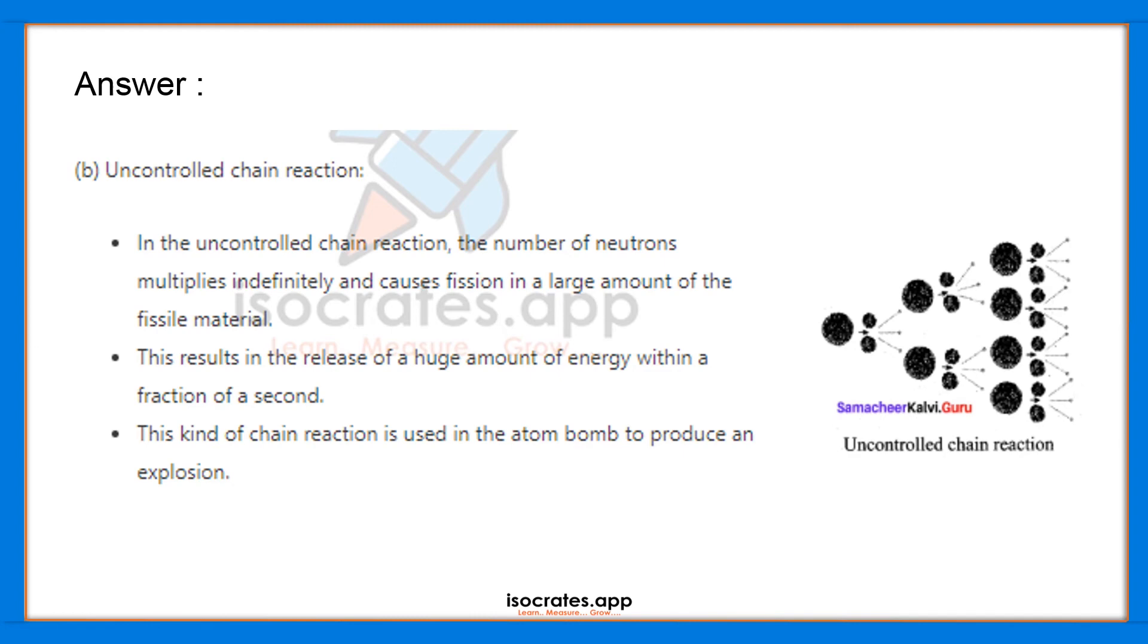This kind of chain reaction is used in the atom bomb to produce an explosion. You may have wondered how in an atom bomb the explosion is so powerful or so disastrous. This is the concept behind the atom bomb: when the nuclear reactions are uncontrolled due to the production of an uncontrolled number of neutrons, the reactions will go on and multiply.